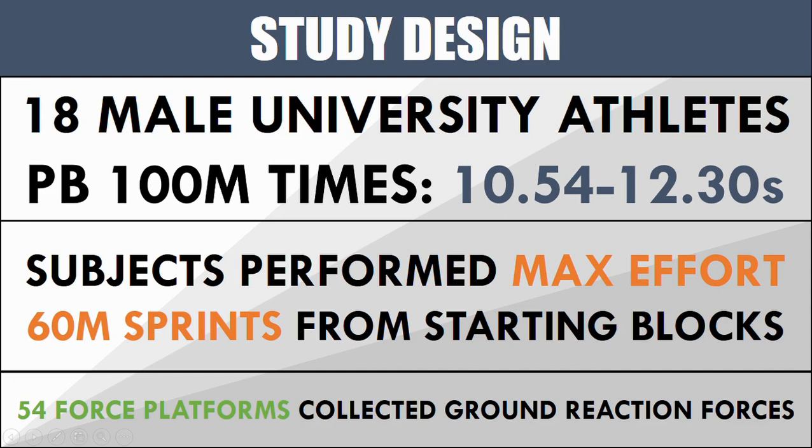Basically, what they did in this study was they got 18 male university athletes with 100 meter sprint PB times between 10.54 and 12.30 seconds. These athletes performed a few maximal effort 60 meter sprints from starting blocks, just as you would see in a track and field event, and they used 54 force platforms to collect ground reaction forces.